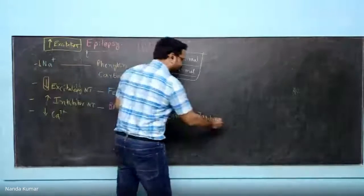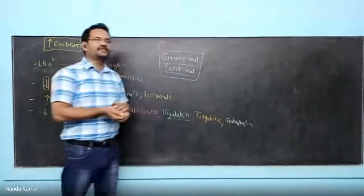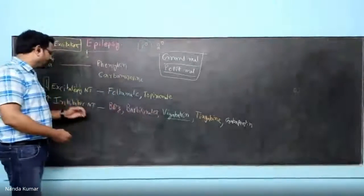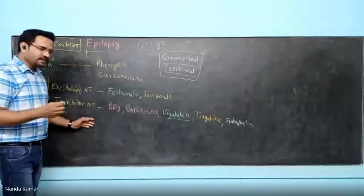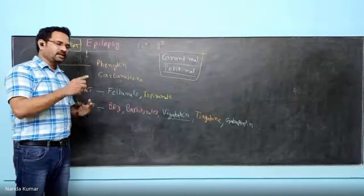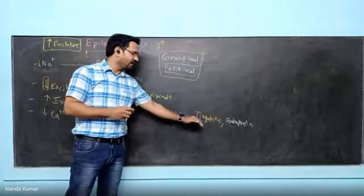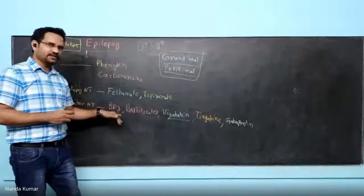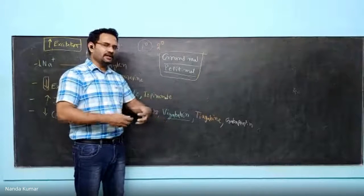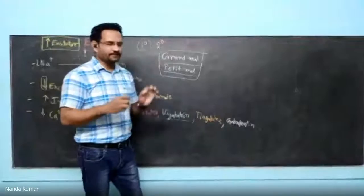The next drug is gabapentin, which is a GABA facilitator. When gabapentin is given, GABA release from the neuron increases. So: vigabatrin is a GABA-metabolizing enzyme inhibitor that increases GABA levels; tiagabine is a GABA reuptake inhibitor; and gabapentin is a GABA facilitator. All these drugs act to increase inhibitory neurotransmitter levels in the CNS.